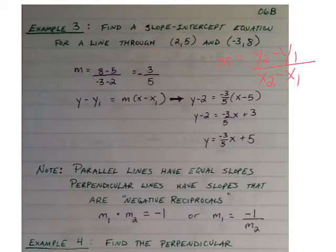And then we can plug that into our point-slope equation because we now have a slope and we have a point. We could use either point. I used the first one. If we wanted to use the second one, we could say y minus 8 equals negative 3 fifths times (x plus 3) because it's x minus negative 3.